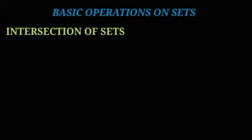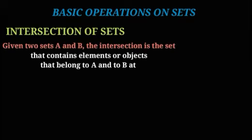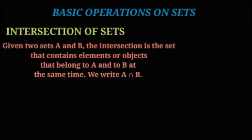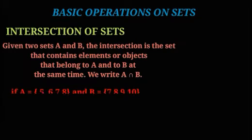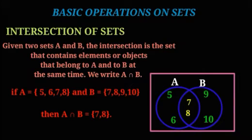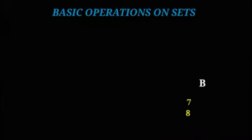Intersection of sets: given two sets A and B, the intersection is the set that contains elements or objects that belong to both A and B at the same time. We write A ∩ B. If A = {5, 6, 7, 8} and B = {7, 8, 9, 10}, then A ∩ B = {7, 8}.